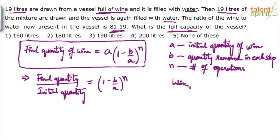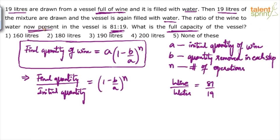The ratio given to us is wine to water equals 81 by 19. This is the final ratio — after two operations, the ratio becomes 81 is to 19, which means finally there are 81 parts of wine and 19 parts of water.